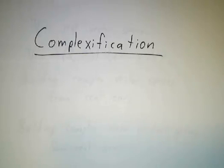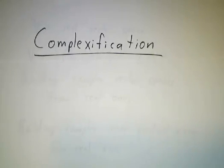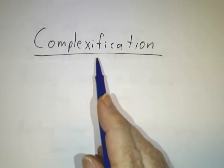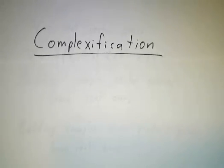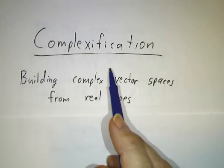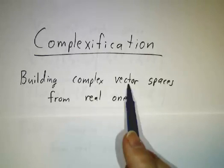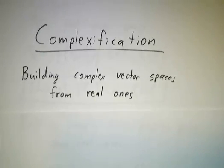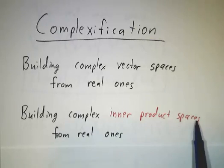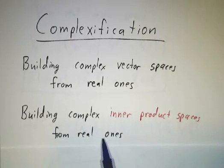So far we've talked about real vector spaces and complex vector spaces, and real inner products and complex inner products. I'm going to show you a way to get a complex vector space and a complex inner product from a real vector space and a real inner product. This method is called complexification. We're going to build complex vector spaces from real vector spaces, and show how to get a complex inner product space from a real inner product space.